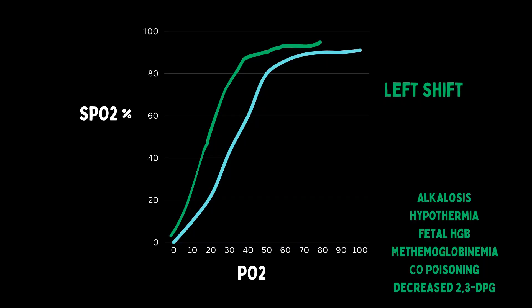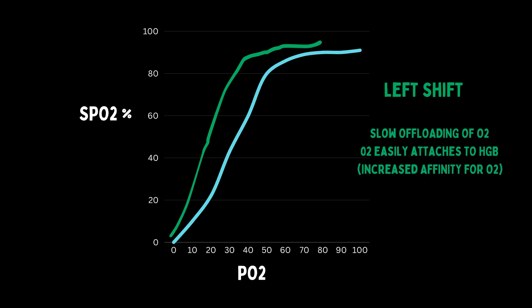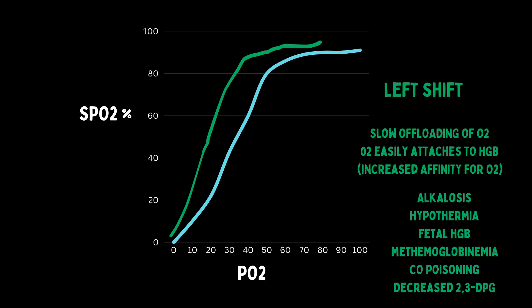Let's look at a left shift of the curve. This has the opposite effect on the hemoglobin-oxygen relationship. In a left shift, it is much easier for oxygen to bind to hemoglobin. The bad part is that hemoglobin doesn't want to offload the oxygen — it holds on to it, so the tissues get starved for oxygen. Things that cause a left shift are alkalosis, decreased 2,3-DPG, hypothermia, methemoglobinemia, carbon monoxide, and fetal hemoglobin, which has a high affinity for oxygen — so fetuses have a left shift.